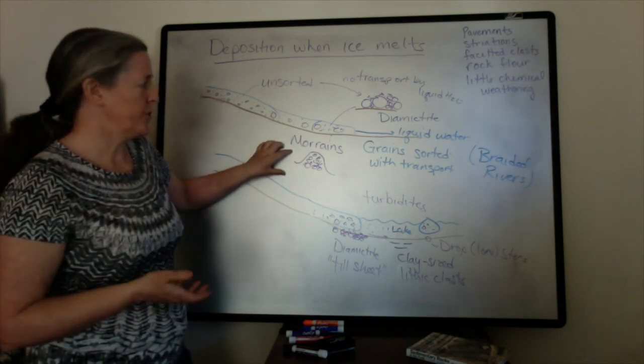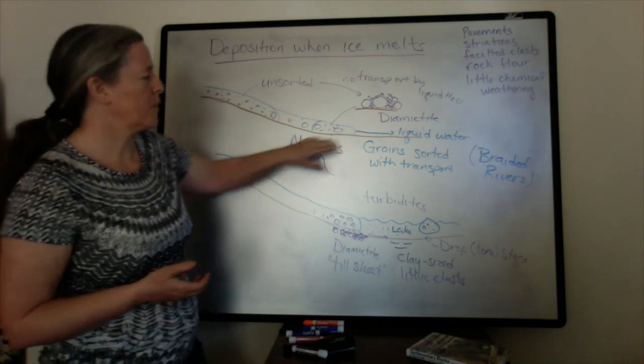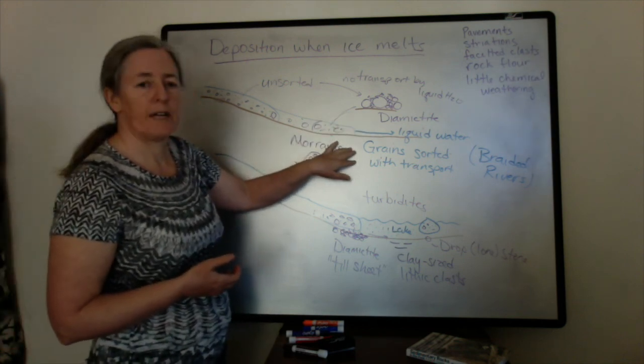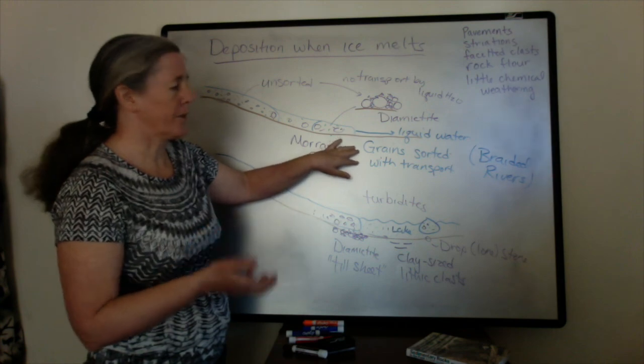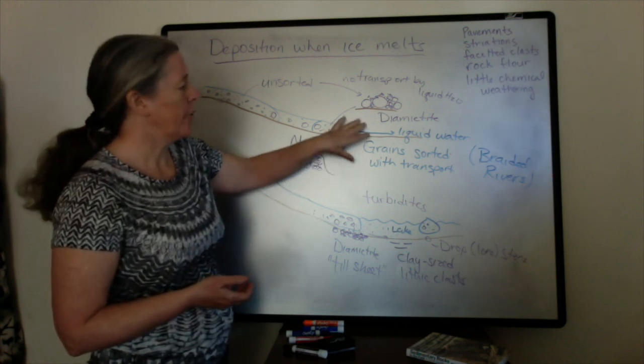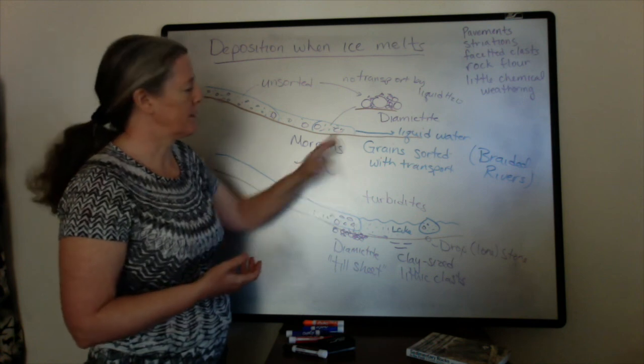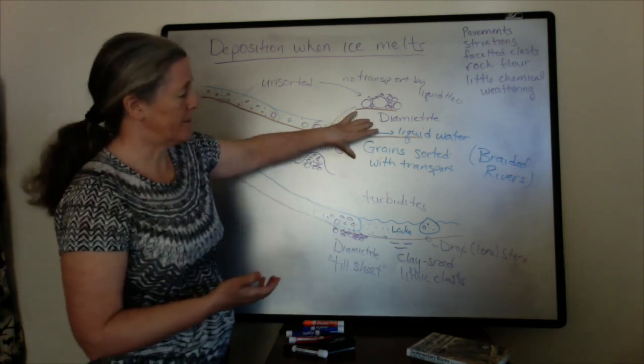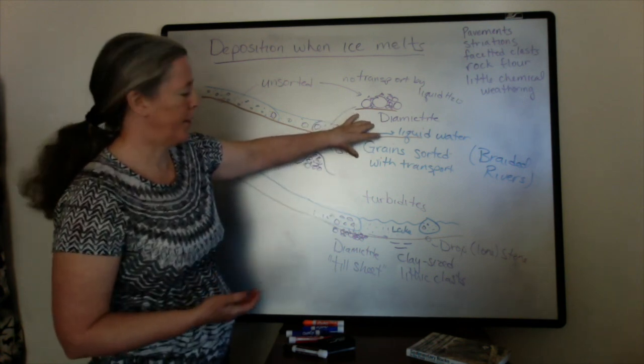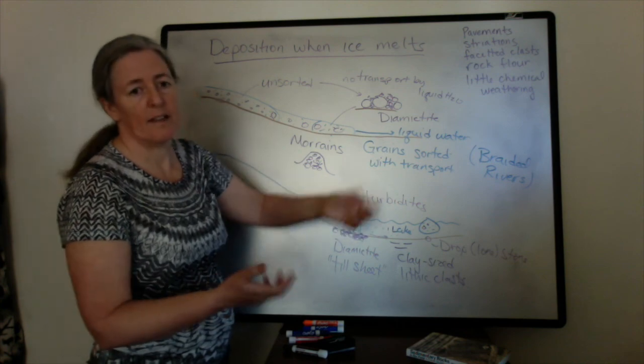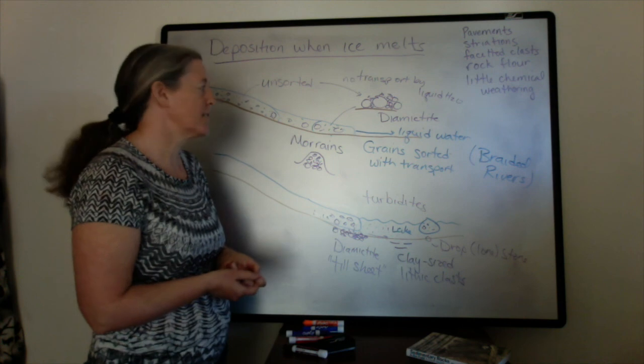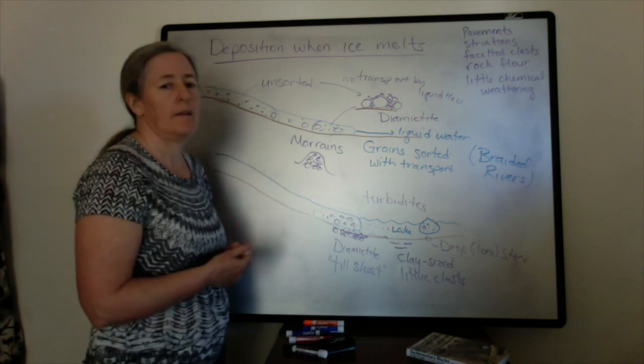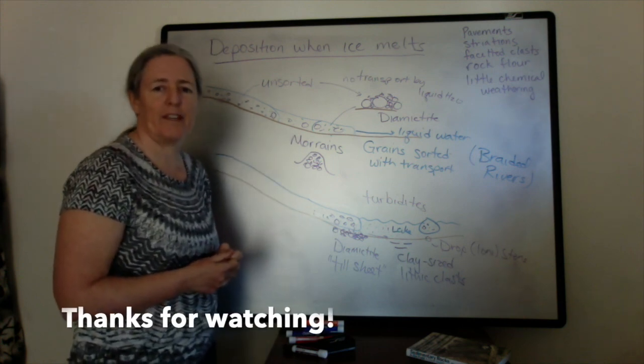However, as it melts, it produces liquid water. And that liquid water can transport the grains and sort the grain sizes out. And you end up with deposits and facies that are associated with, for example, braided rivers, lakes, or marine environments, with an inherited signature from the processes of transport within the ice.